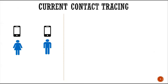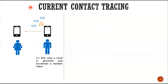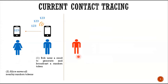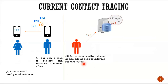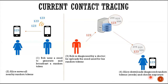Most current contact tracing approaches are based on Bluetooth and work as follows. When Alice and Bob are close together, Bob uses the system to generate and broadcast random tokens — you can see here tokens 1, 2, and 3. Alice saves all the nearby random tokens to her phone. A few days later, Bob tests positive for the disease. He uploads all the seeds used to generate his random tokens, so the server can see tokens 1, 2, 3. Alice then downloads all the diagnostic random tokens from the server and checks for matches.